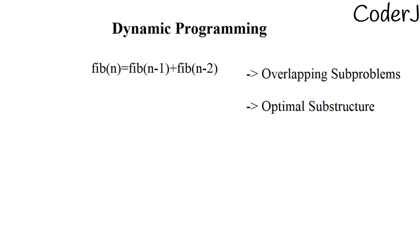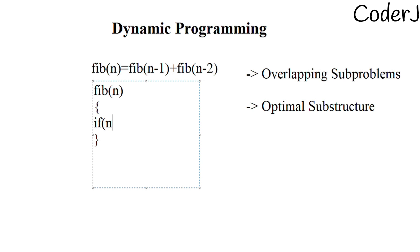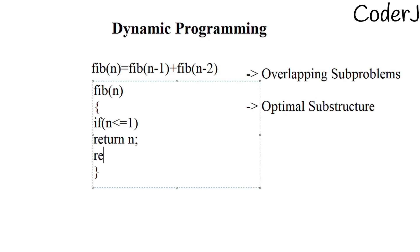If I ask you to write a recursive code for Fibonacci numbers, let me write a pseudo-code. For fib(n), the base condition is: if n is less than or equal to 1, return n — because the 0th Fibonacci number is 0 and the 1st is 1. Otherwise, return fib(n-1) plus fib(n-2). That's the complete recursive code for Fibonacci.